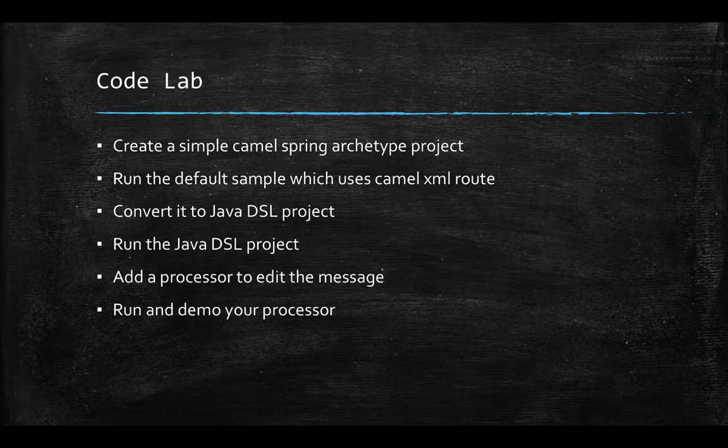As soon as the project is created we are going to try and run the project, and once the project is executed you will see that the project first uses Camel XML and not Java DSL. Then we are going to learn how to convert this project into a Java DSL project and execute that project.